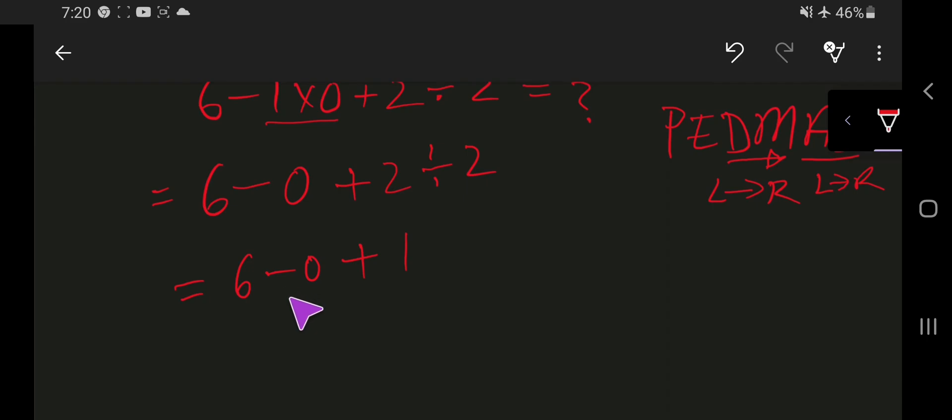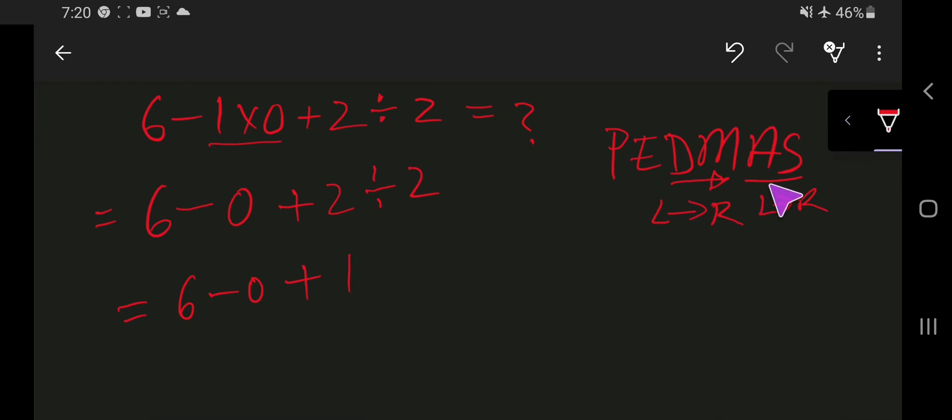Then here we have minus and here we have plus. So, we will work from left to right. So, 6 minus 0. That gives us 6 plus 1. And that gives us 7. So, the right answer is 7. Right?